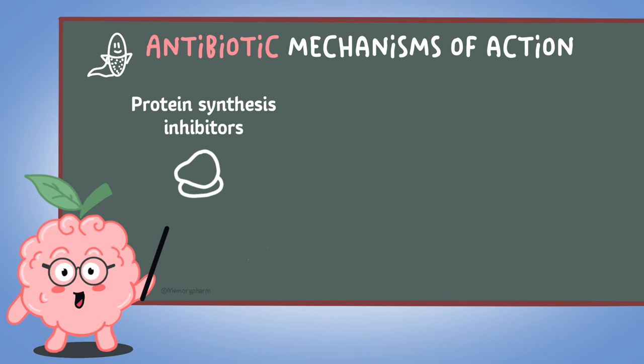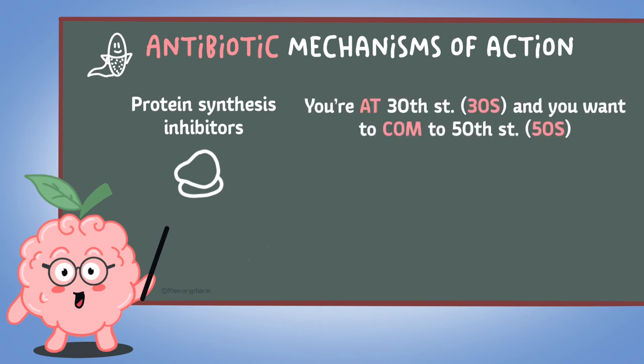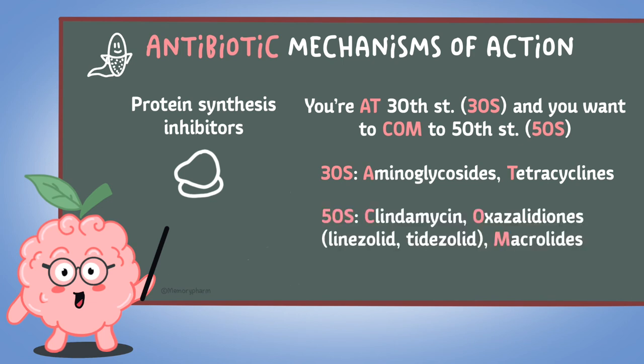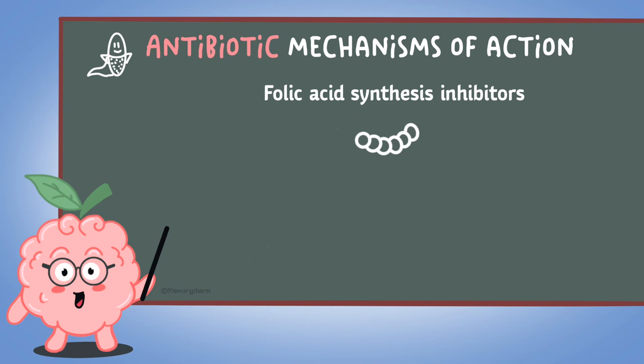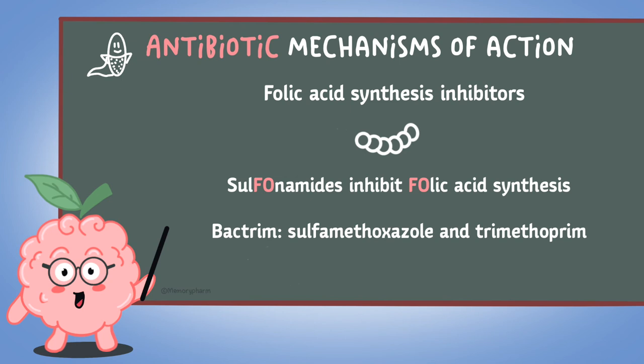For protein synthesis inhibitors, remember the mnemonic: 'you're at 30th Street for 30S ribosome, and you want to come to 50th Street for 50S ribosomes.' So the 30S ribosome inhibitors include aminoglycosides and tetracyclines. The 50S inhibitors include clindamycin, oxazolidinones, and macrolides. For antibiotics that inhibit folic acid synthesis, remember the FO in sulfonamides as inhibiting folic acid synthesis — that includes sulfamethoxazole and trimethoprim.